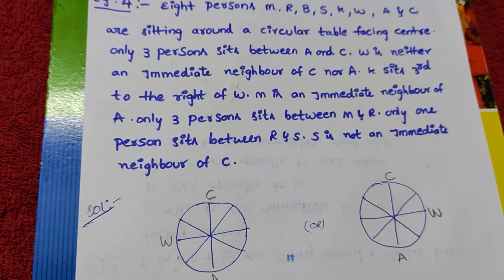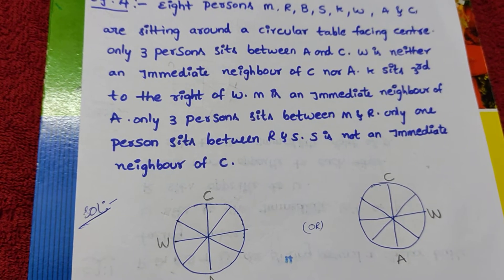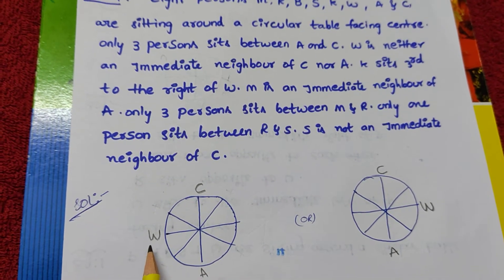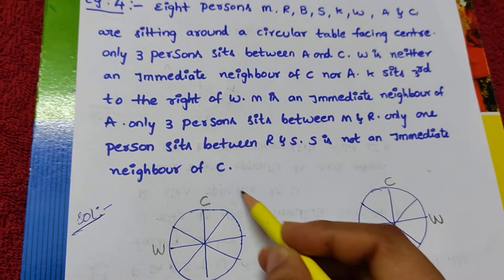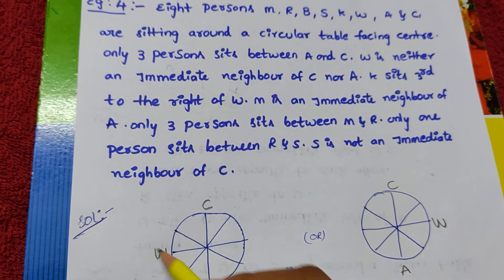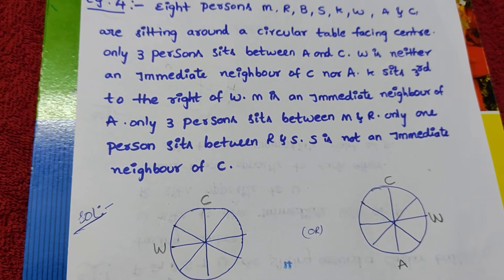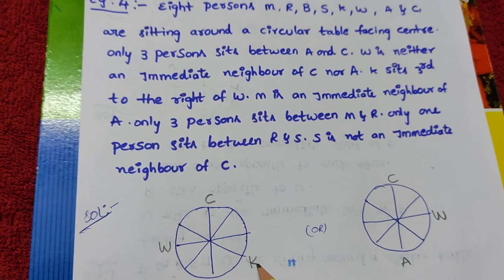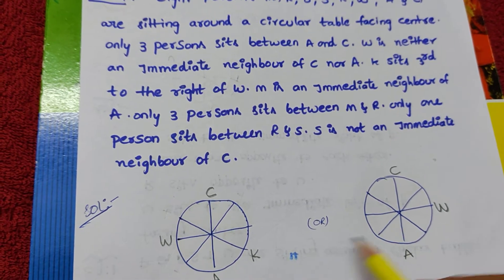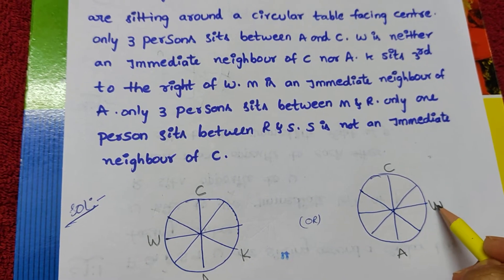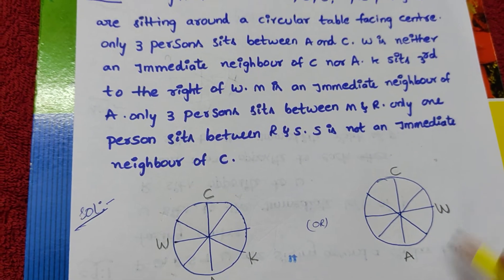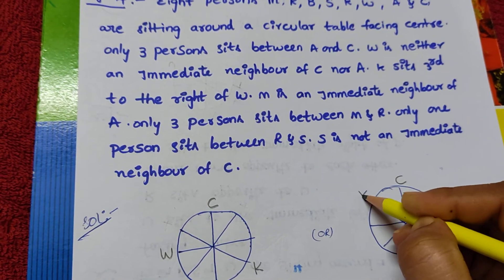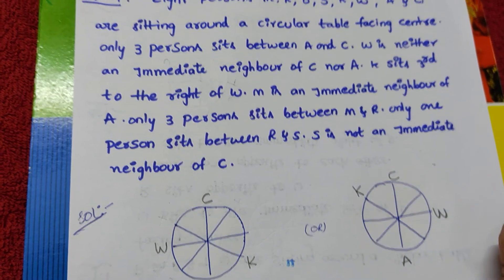K sits third to the right of W. From this diagram, right is this direction. W — one right, two right, three right — that person is K. Same from the second diagram: W — one right, two right, three right — K goes here.